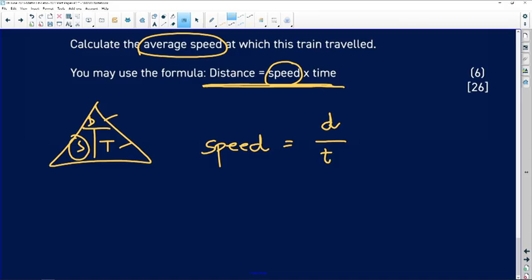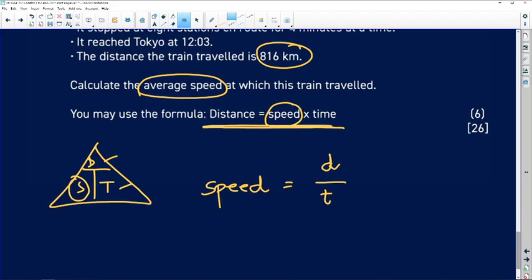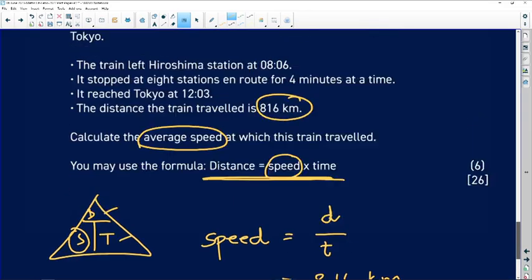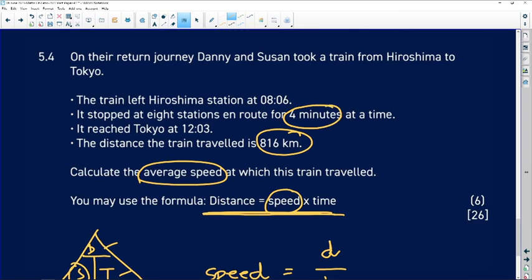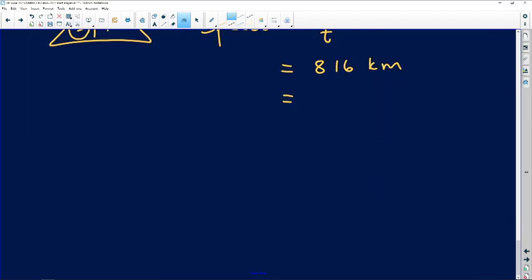Now, do I have a distance? Do I know the distance that they have traveled? Yes, I've been given a distance: 816 kilometers. Do I have a time? I have a time, but I've been told that in between they were stopping for four minutes. So I need to multiply that. I've got a distance but I don't have a time yet.